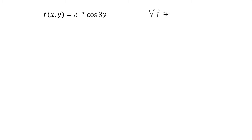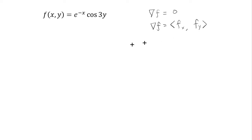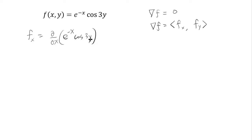What's a critical point? It's a point where the gradient of f is equal to zero as a vector. In our case, because this is two-dimensional with two variables, the gradient of f is defined as f differentiated by x and f differentiated by y. So let's calculate: f differentiated by x means you're differentiating this function as a function of x, treating y as a constant.